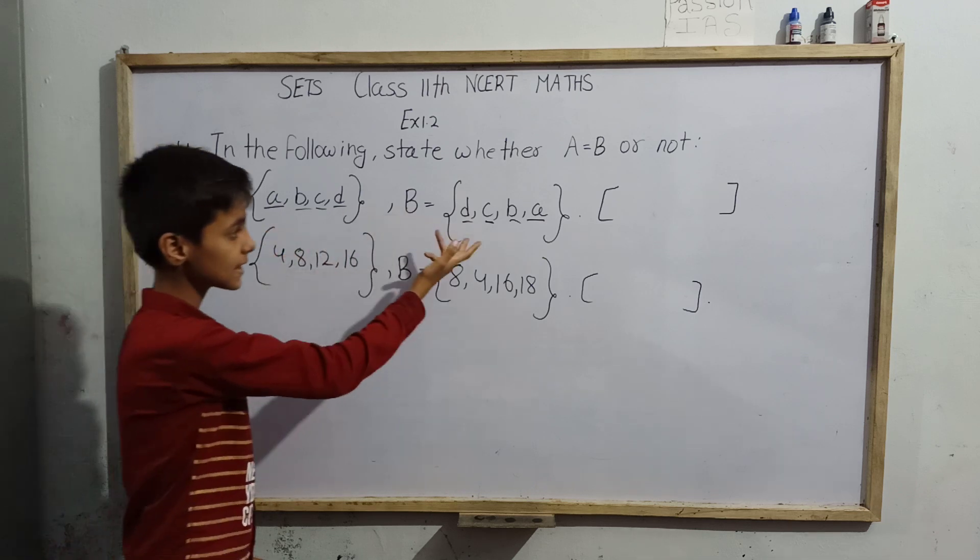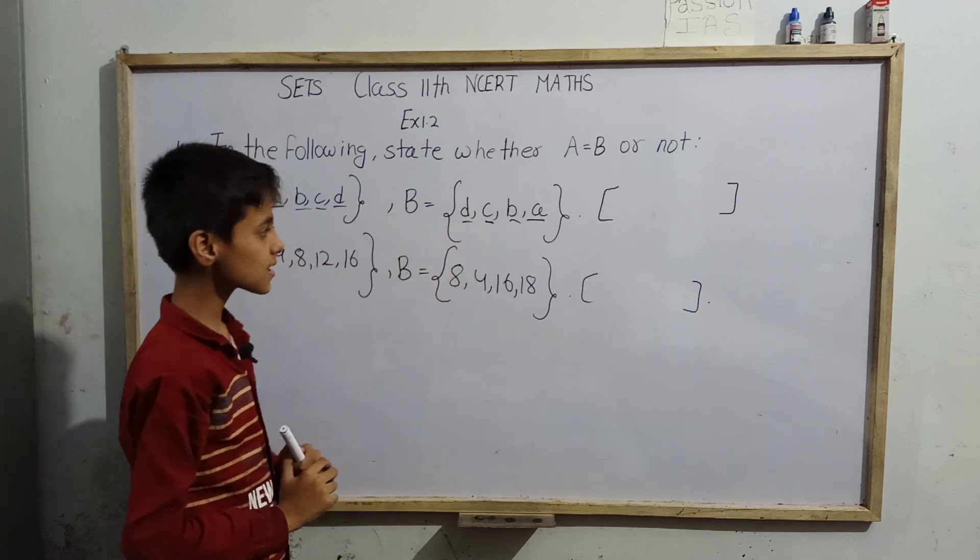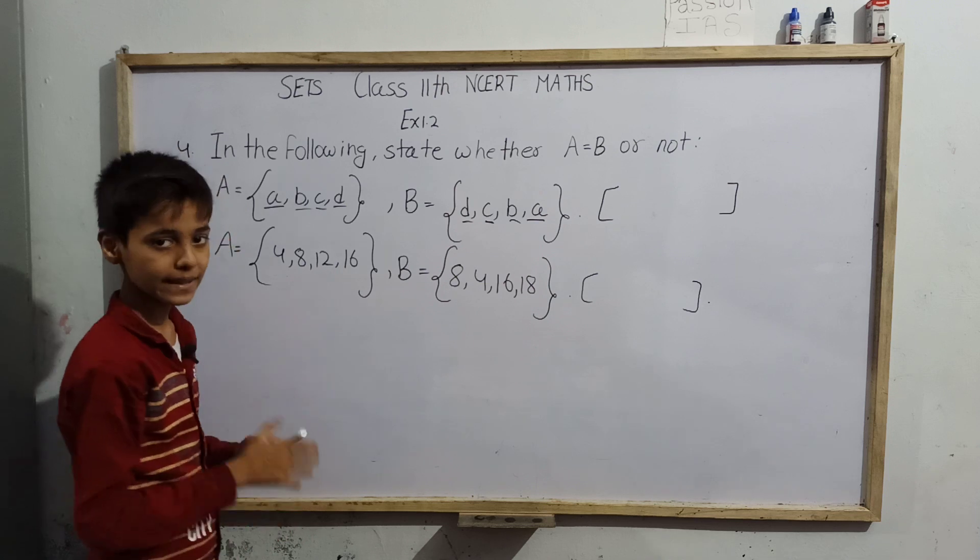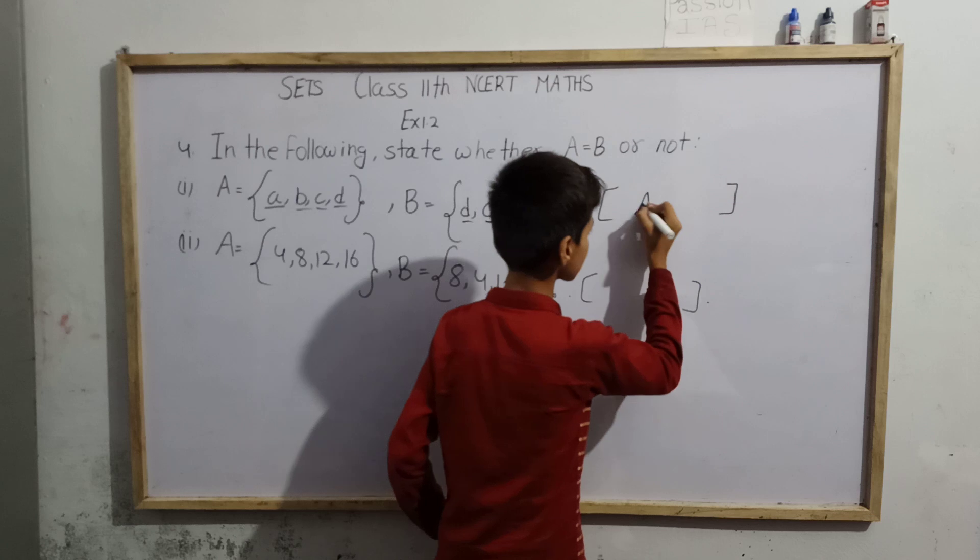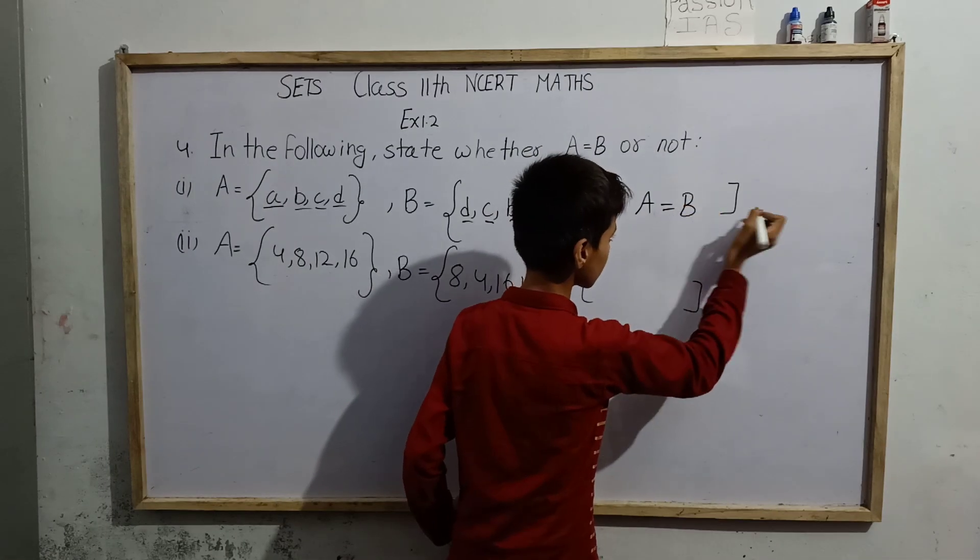Now A, B, C, D all are present in both, and no other element is present. We can see the number of elements is same and all elements are same. So we can write that A equals B.